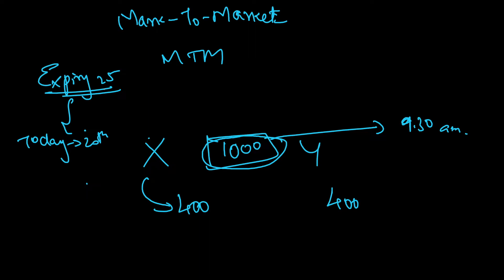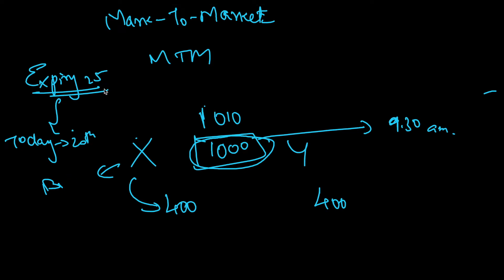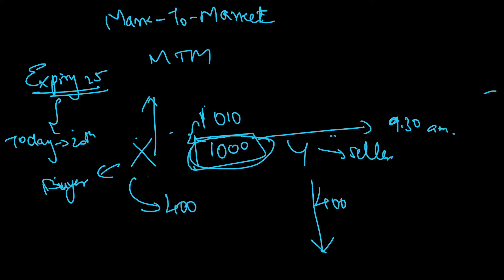So they both are paying 400 and getting exposure to a contract worth 1000. Now when the market closes today, imagine the price goes to 1010. The market has gone up. X is the buyer — buyers are bullish and want the price to go up. Y is the seller and wants the price to come down. So with the price going up, the buyer agreed to buy at 1000 on expiry date the 25th, and now on the 20th itself the price has gone to 1010 — up by 10.